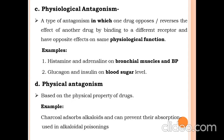The fourth type is physical antagonism, which is based on the physical property of a drug. For example, activated charcoal absorbs alkaloids and can prevent their absorption — it is used in cases of alkaloidal poisoning. This mechanism is a type of physical antagonism.